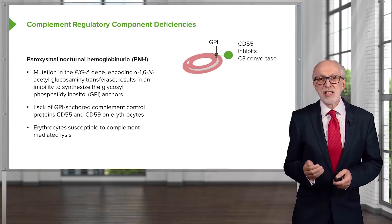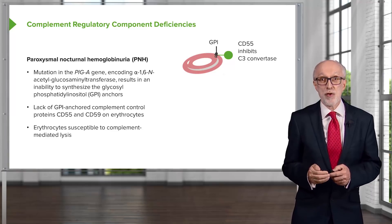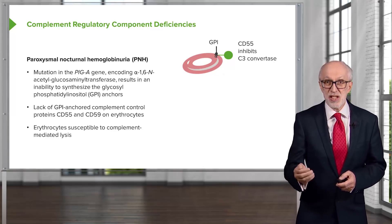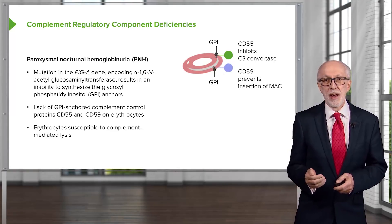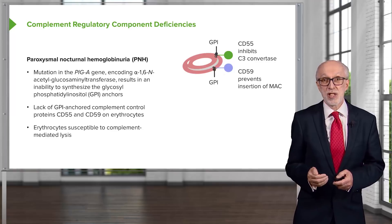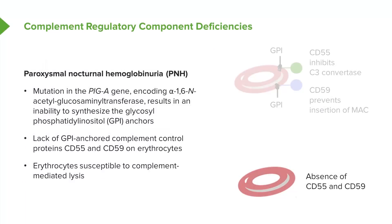Normally, CD55 — which requires a GPI anchor to hold it onto the cell surface of the erythrocyte — inhibits the C3 convertase, which is necessary for complement activation. Likewise, CD59, which also requires a GPI anchor, functions to prevent insertion of the membrane attack complex. So in the absence of these GPI anchors, neither molecule is present on the surface of the red blood cell, and the membrane attack complex can cause lysis of the red blood cell, resulting in PNH.